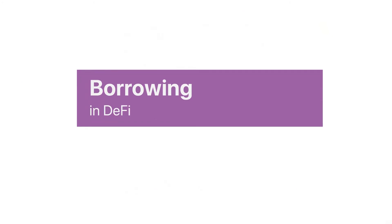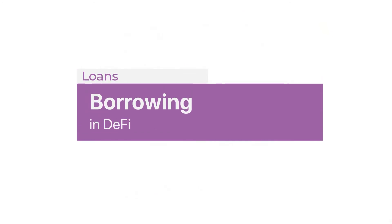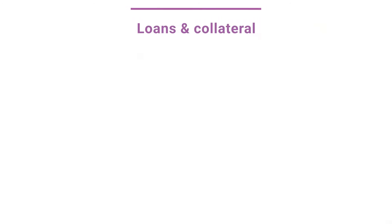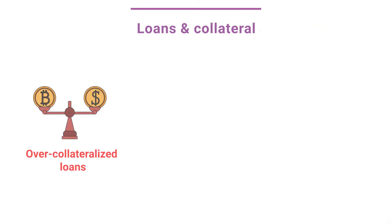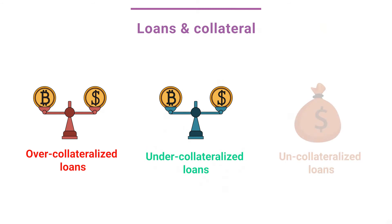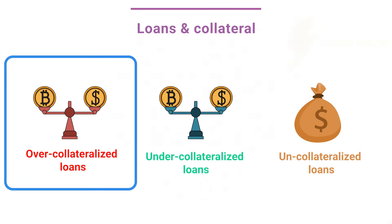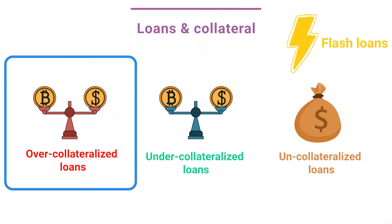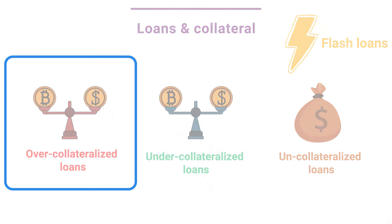Borrowing is basically taking a loan. When you take a loan, you are typically required to provide collateral — this protects the lenders in the event the borrower defaults on the loan. In traditional finance, you can take loans which are over-collateralized, under-collateralized, or even uncollateralized. Currently, DeFi protocols only support over-collateralized loans. One exception to this are flash loans, which let you borrow an unlimited amount of money without any collateral — I will cover flash loans in another video, so for now let's limit ourselves to over-collateralized loans in DeFi.